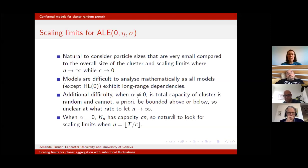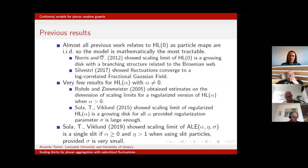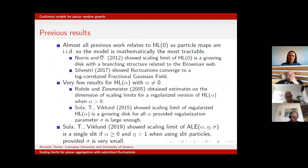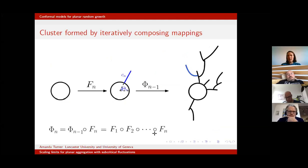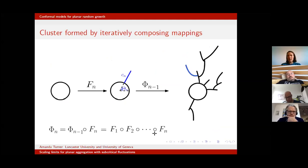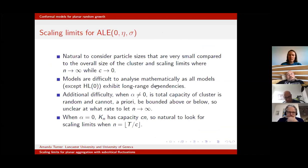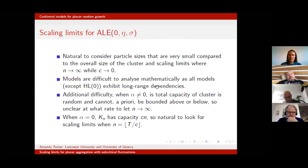To see non-trivial shapes, we need to let n tend to infinity while the particle size C tends to zero. There are two problems: first, the models are very difficult to analyze — all except HL(0) have very long-range dependencies. The derivative of the (n−1)-map is the composition of all maps up to time n−1, so to understand how this derivative behaves we need the entire history of the process.